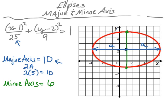Now for the minor axis — the shorter one. Counting the vertical distance gives 1, 2, 3, 4, 5, 6 — a minor axis of 6 units. Using the equation, B equals the square root of 9, which is 3, and 2 times 3 gives 6 — the same value from the graph. So we can find the major and minor axis by both looking at the graph and using the equation.